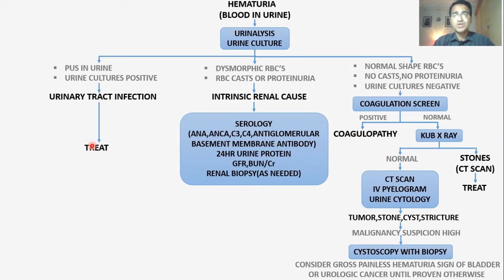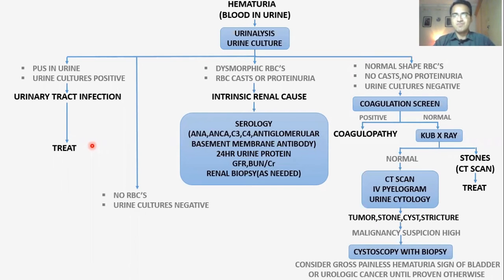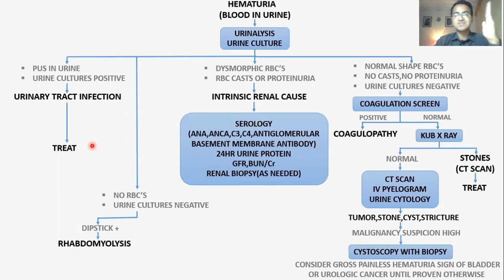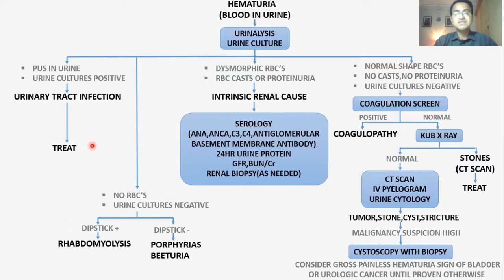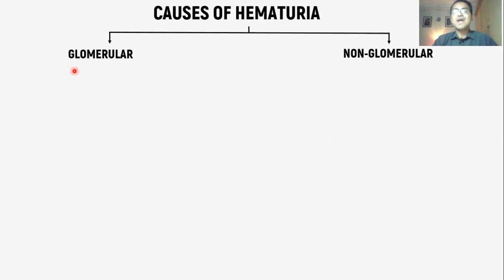In the last case, there are no RBCs on urinalysis despite suspecting hematuria, meaning there was no actual blood. The red color of urine was due to other causes and urine cultures were negative. If the dipstick is positive with no RBCs, this is due to rhabdomyolysis — myoglobin from muscle breakdown causing red color of urine. If the dipstick is negative, it is most likely due to porphyrias, beeturia from eating beets, or certain drugs like rifampicin.